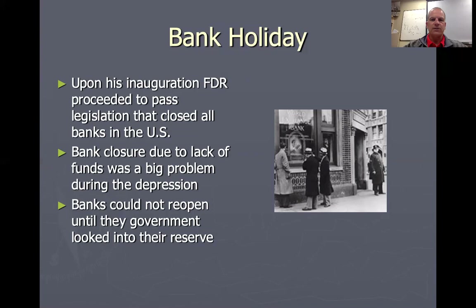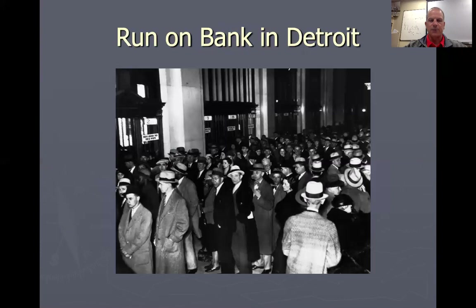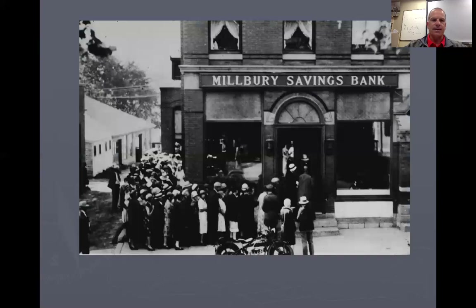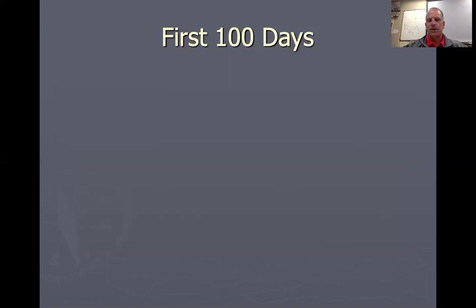He was trying to stop runs on banks. A run on a bank in Detroit — and this was going on everywhere — people were rushing to the bank to get their money out because they feared the bank would close. People running to withdraw their money would lead to banks actually closing. Here's a run on a bank in Connecticut. You can see people desperate to get their money before the bank closed and their life savings disappeared.